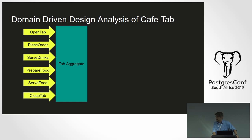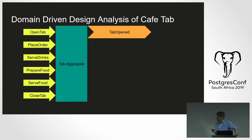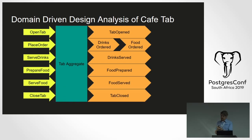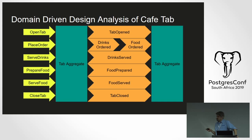A command doesn't alter the state of the aggregate directly — it's more of a question than a command. We're asking the tab: if I open a tab, what will happen? The tab says: I would open with these values. You tell the aggregate what you want to do, it tells you what would happen, you play those events against the aggregate, and only then does the state change.